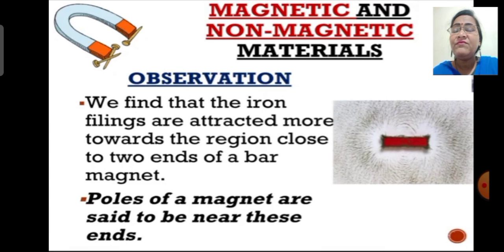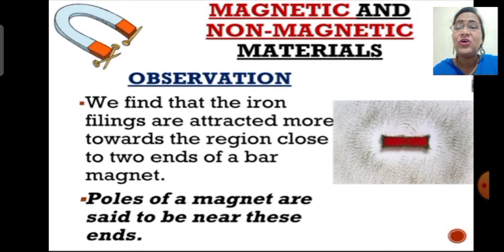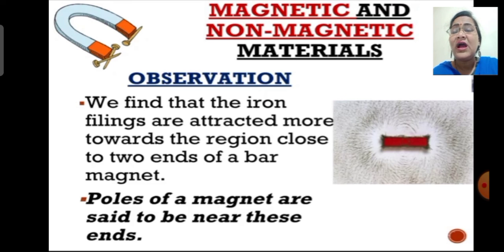What we actually observe is that the iron fillings will be attracted more at the regions closer to the two ends of the magnet. These two ends of the magnet are called the poles of the magnet. The poles of a magnet have the high capacity of either attracting any object or repelling it.